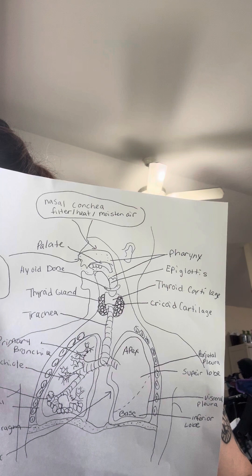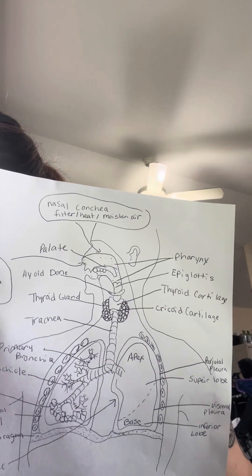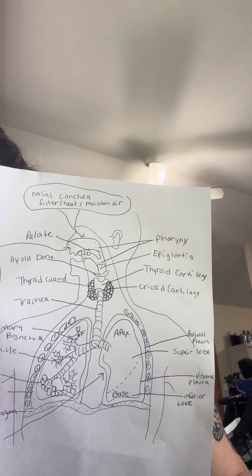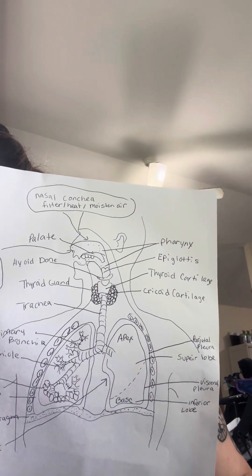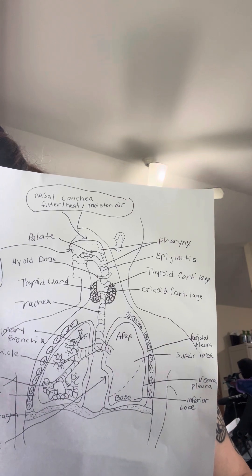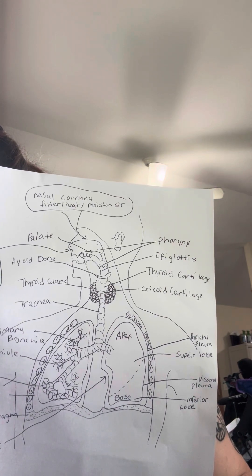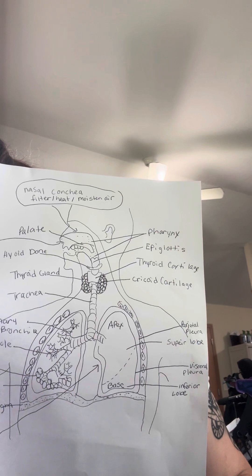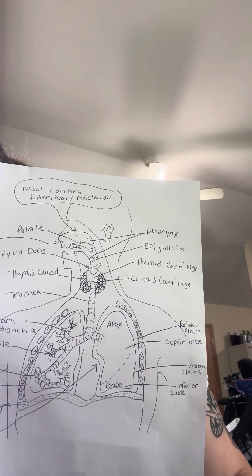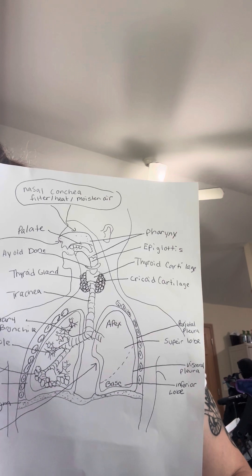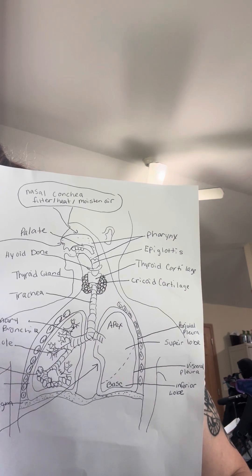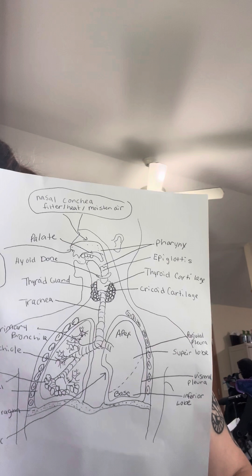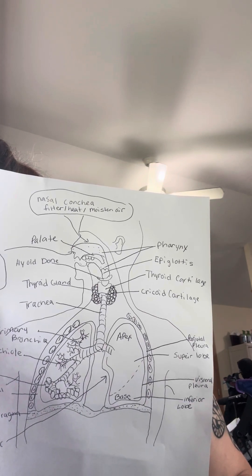Cellular respiration occurs inside the cells and takes place in three stages: glycolysis, the Krebs cycle, and oxidative phosphorylation. As cells respirate, they produce CO2 as a byproduct. The CO2 diffuses out of the cells into the bloodstream. Hemoglobin can also bind to the CO2, forming carbaminohemoglobin.